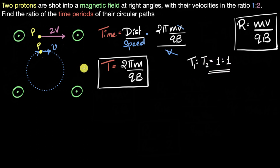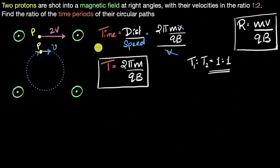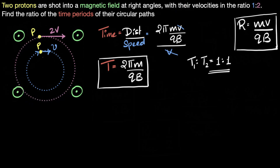Let's intuitively make sense of why this is happening. One proton is thrown at twice the speed — so why does it take the same time to complete a circle? Because if the speed doubles and everything else stays the same, looking at the radius equation, the radius also doubles. So it travels twice the distance, but at twice the speed. Therefore the time to complete the circle is exactly the same, and the time periods are equal.